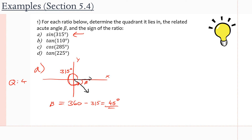Now we use the CAST rule to find out what is the sign of the ratio of the related acute angle with respect to the principal angle, which gives us the overall sign of the numerical ratio. We start in the fourth quadrant with C, and then spell CAST going counterclockwise. The letter tells us which ratio is positive in that quadrant. In the fourth quadrant, only cosine is positive, and we are working with sine of 315 degrees. So our sine here is going to be negative, because we're in the fourth quadrant and only cosine is positive there. And that's it for A.